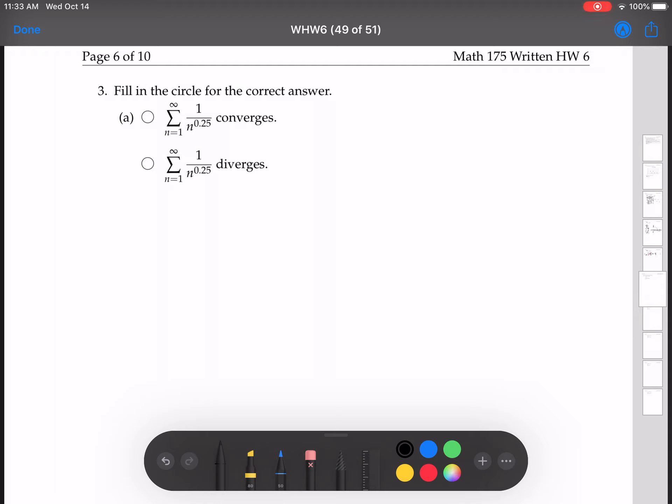Remember that 1 over n to the p converges if p is bigger than 1, diverges if p is less than or equal to 1.